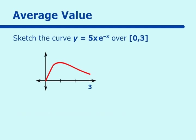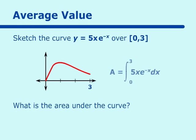The next thing we want to find is the area under the curve. So the area under this curve is found by A is equal to the integral from 0 to 3 of 5x e to the negative x dx.